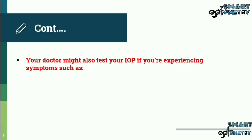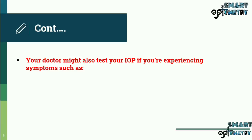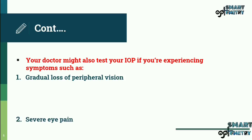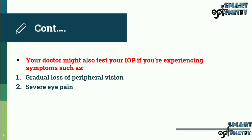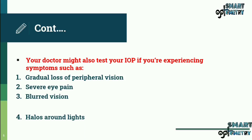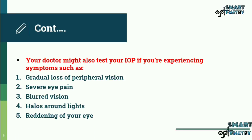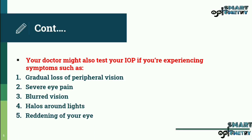You may also be at risk if you have poor blood circulation or have used corticosteroid medication for prolonged periods of time. Your doctor might also test your intraocular pressure if you are experiencing symptoms such as gradual loss of peripheral vision, severe eye pain, blurred vision, halos around lights, or reddening of your eyes.